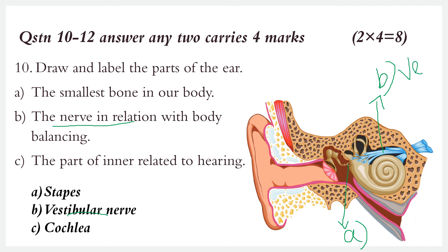The part of the inner ear related to hearing is the cochlea (snail-shaped structure). Which is the smallest bone in our body? The smallest bone is the Stapes, found in the ear.